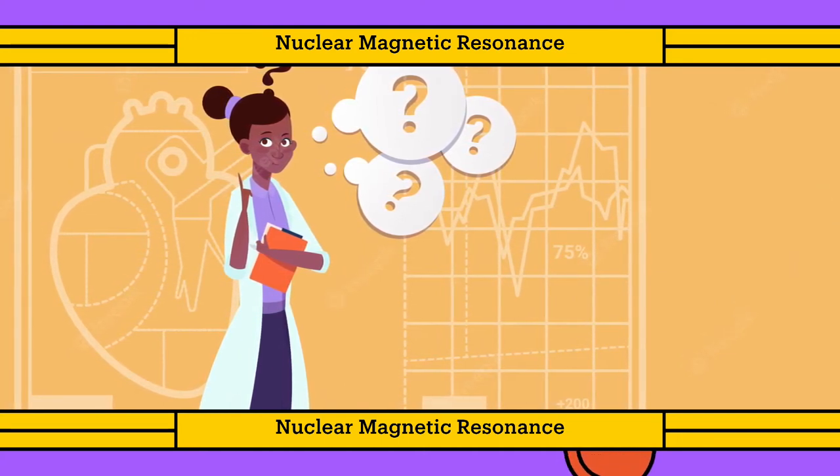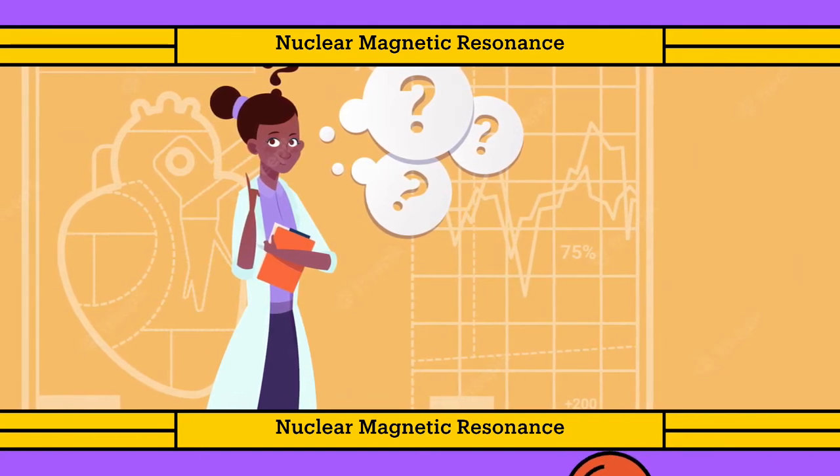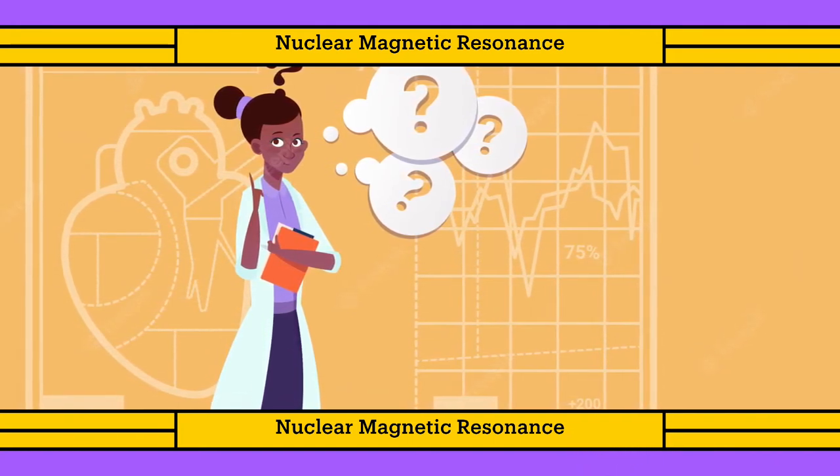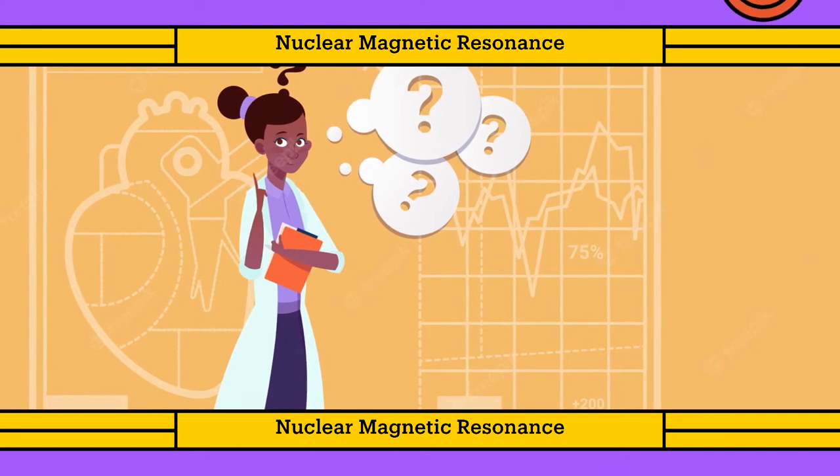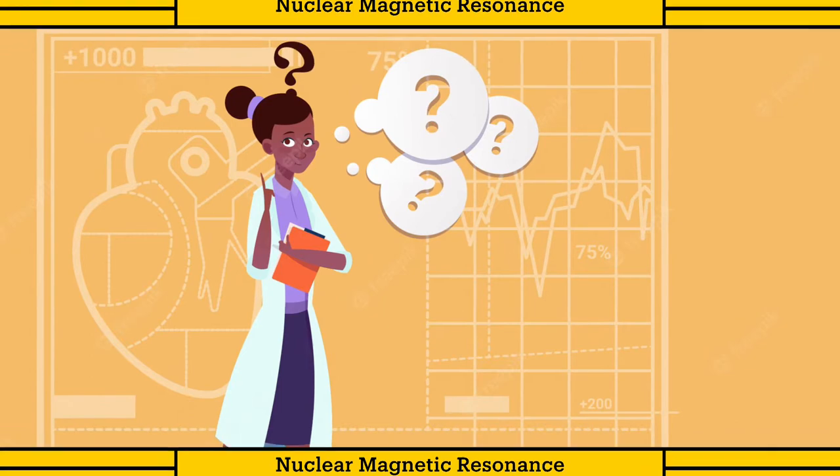scientists had difficulty confirming their chemical reactions. Whilst they were aware of what they wanted their desired products to be, there weren't a lot of precise ways to confirm they had carried out the right reaction. This is where nuclear magnetic resonance comes into play.